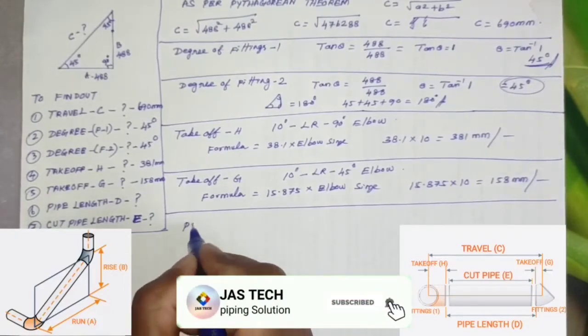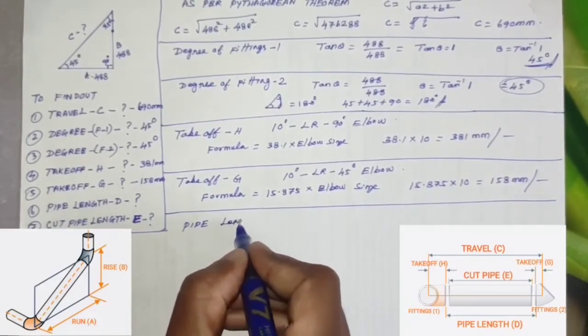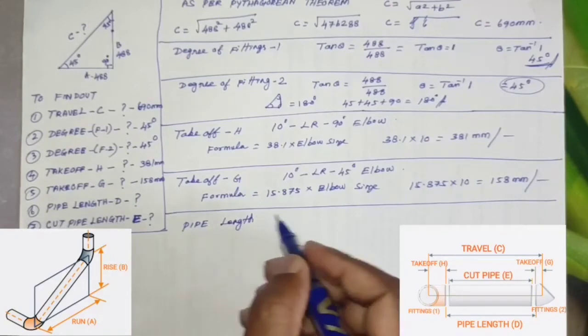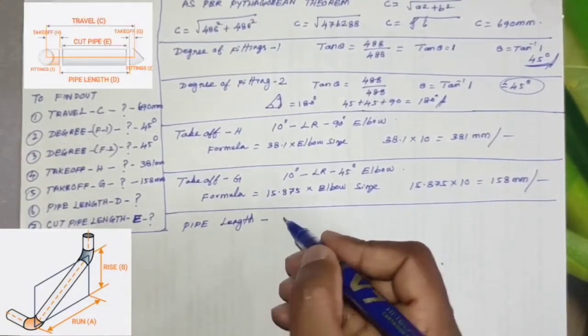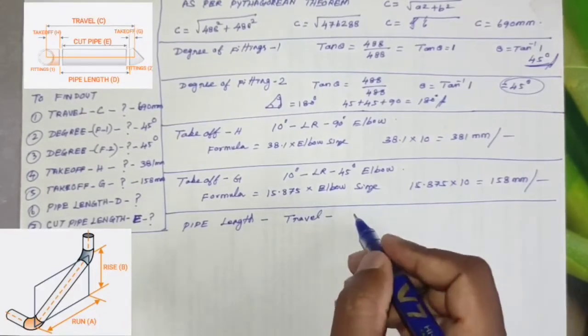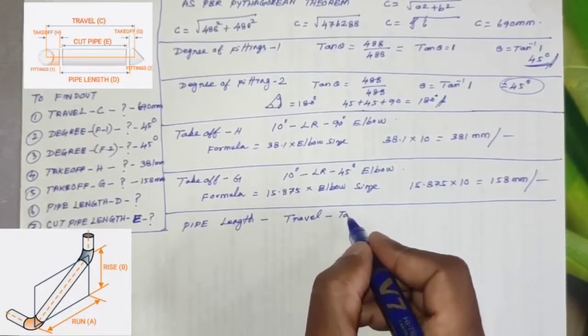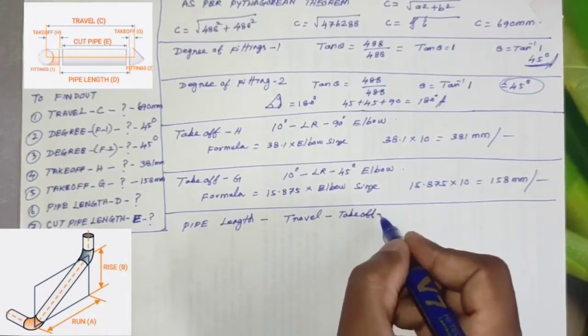Next one, we want to find pipe length D. Pipe length D formula equals travel minus takeoff H minus takeoff G.